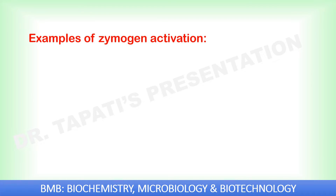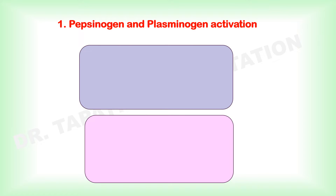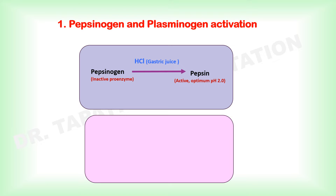Examples of zymogen activation include pepsinogen and plasminogen activation, and the pancreatic zymogen activation cascade. Gastric juice is a combination of hydrochloric acid, lipase, and pepsin. By the action of HCl present in gastric juice, pepsinogen is converted into active pepsin, which itself catalyzes further conversion of pepsinogen. Pepsin is the chief digestive enzyme in the stomach, which breaks down proteins into polypeptides.